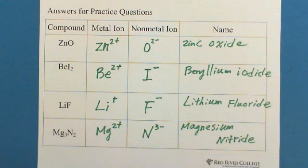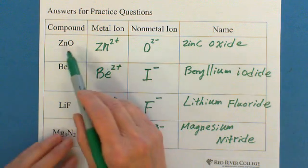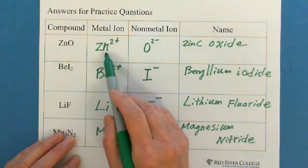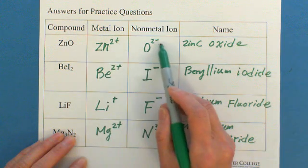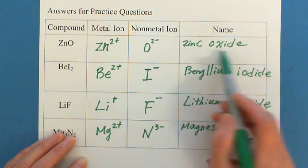Okay, ZnO, metal is Zn, which is zinc, 2+, oxygen, 2-, name them, zinc oxide.